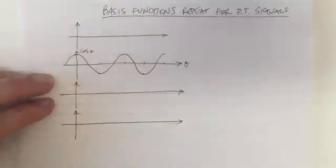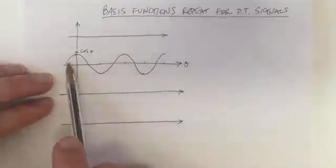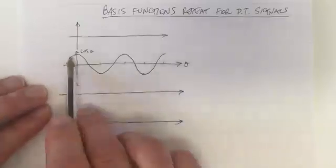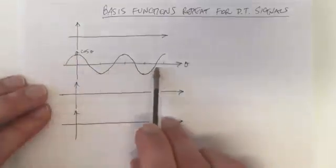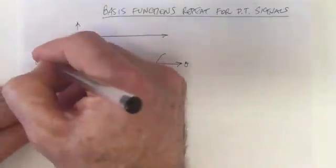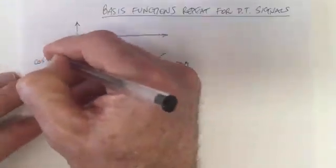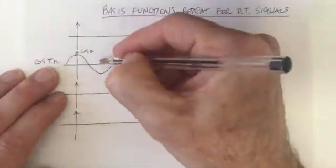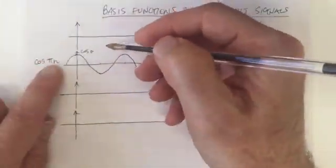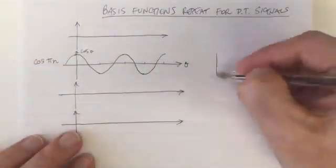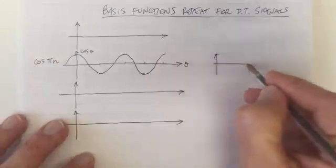I want to demonstrate how the basis functions repeat for discrete time signals. So let's consider this function here, cos of theta, and I've plotted it out here for a certain frequency, omega 0. So let's say we're going to consider that this is for cos of pi n, and we're going to sample it at integer values of n and plot out what that is over here.